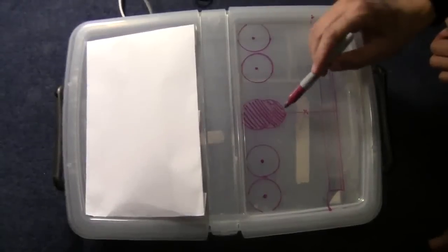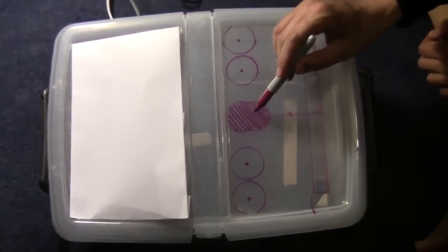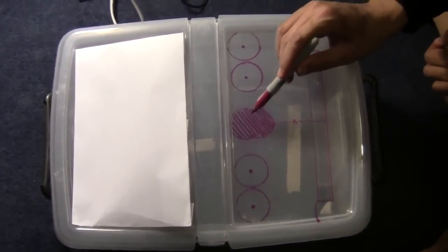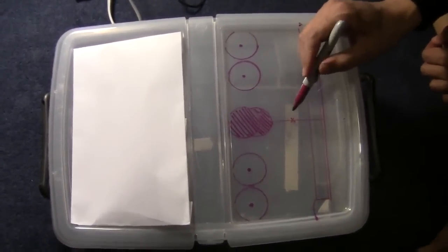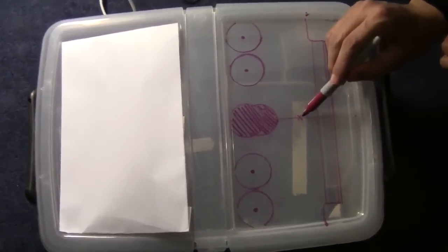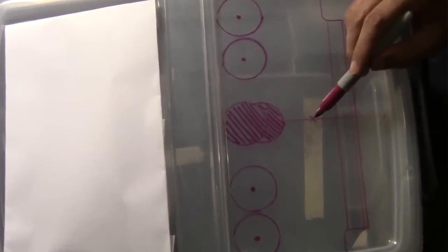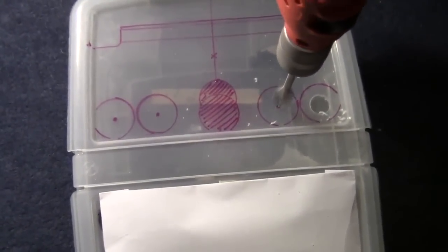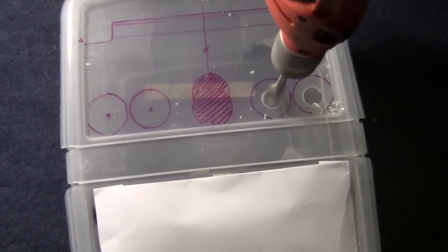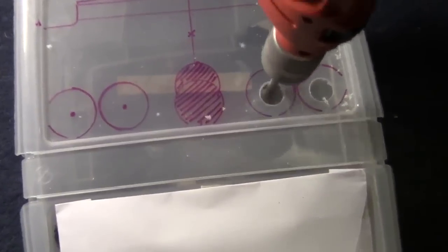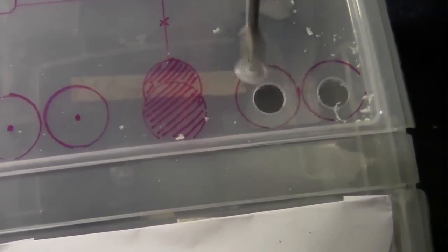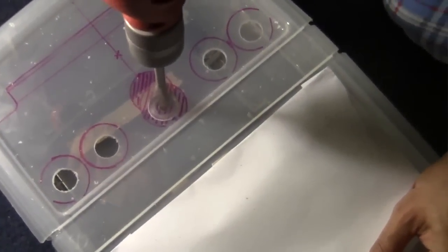Markings were made on the lid, two circles on each side of the midline. Two centimeter circular holes were made, and these are for insertion of laparoscopic instruments.